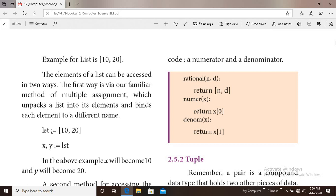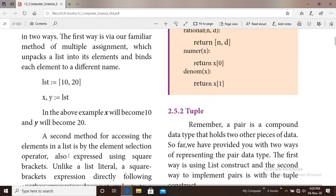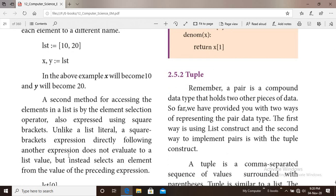First, list is created. The name of the list is LST. Values are 10, 20. Next, the first value will be assigned to x and the second value will be assigned to y. In the above example, x will become 10 and y will become 20.